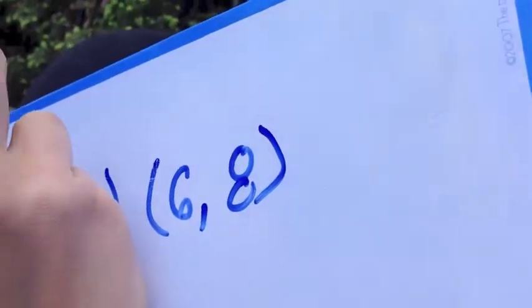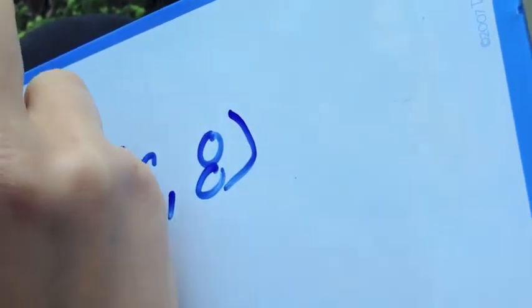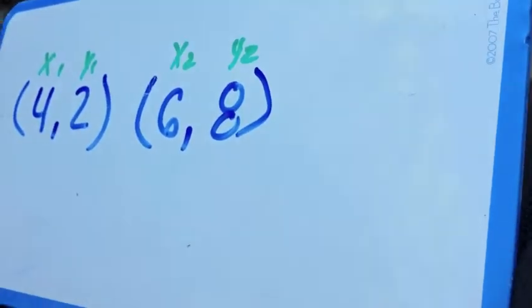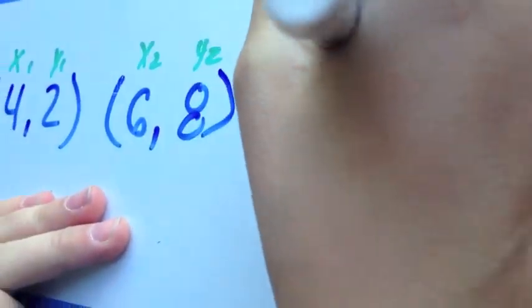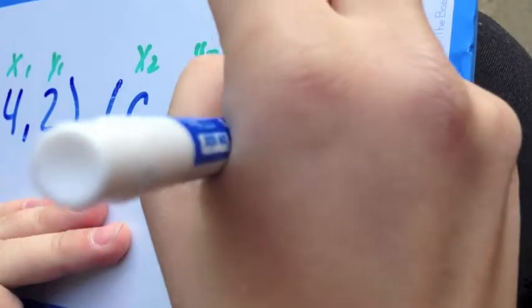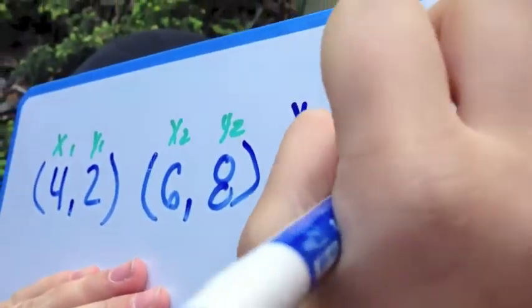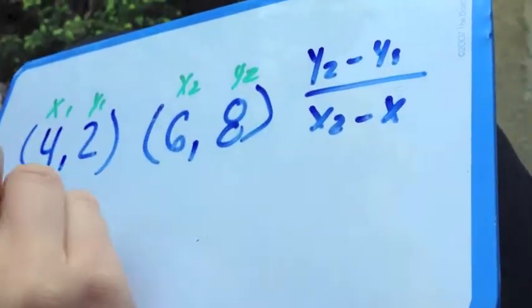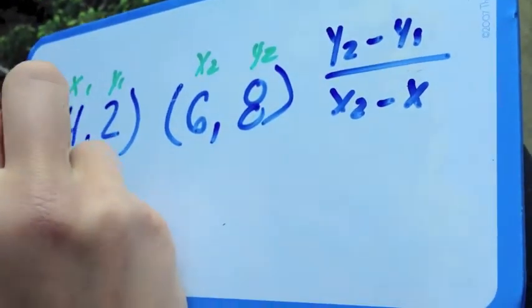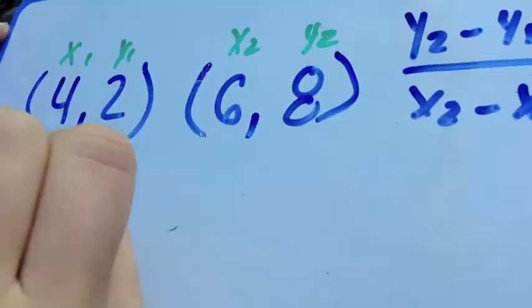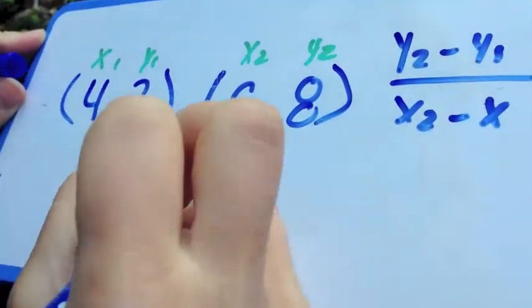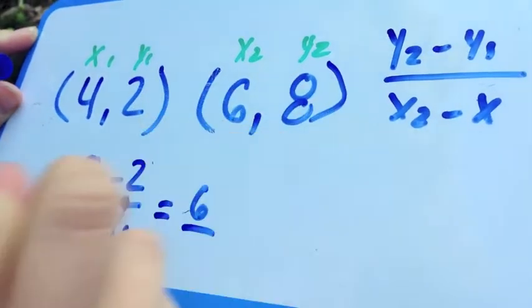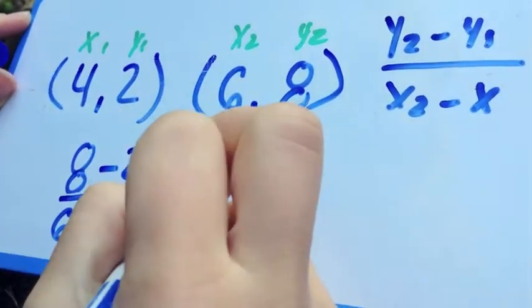So to do that, we use our x1, y1, x2, and y2. Now you have to subtract y2 minus y1 over x2 minus x1. Can you fill that in for me? Let's see. 8 minus 2 over 6 minus 4. Great! So what's 8 minus 2? 6. And 6 minus 4? 2. Perfect!